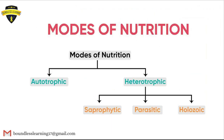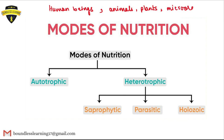Now comes the different modes of nutrition. In our environment, there are plenty of organisms — human beings, many different animals, plants, and microorganisms including bacteria, viruses, algae, and fungi. These organisms can follow different modes of nutrition. There are particularly two modes of nutrition: the first being the autotrophic mode and the second being the heterotrophic mode.